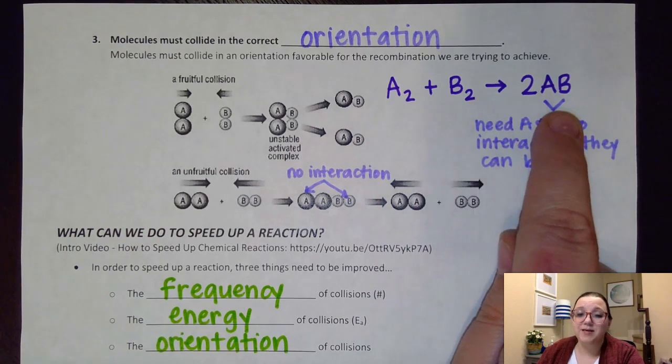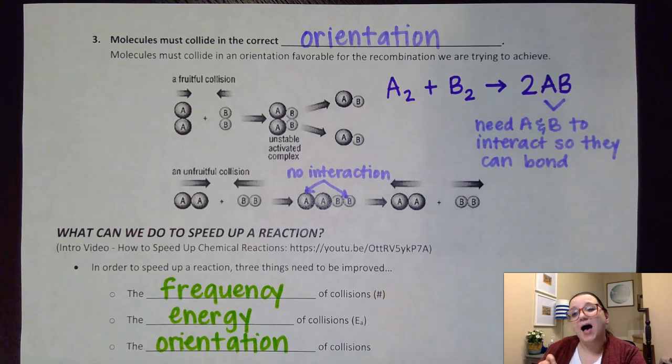So if I want A and B to be bonded to each other in these two new molecules, I need the A and B to interact in the collisions. Otherwise a bond can't form between them.